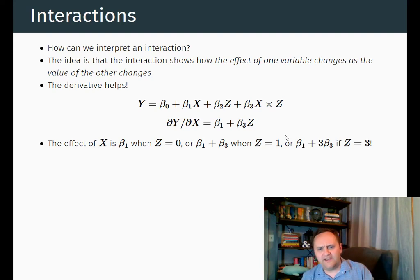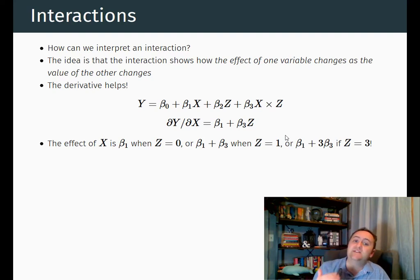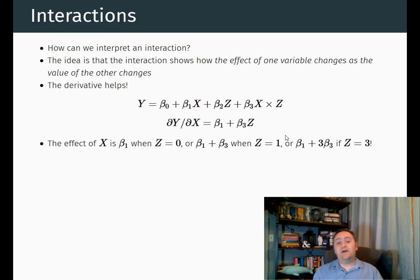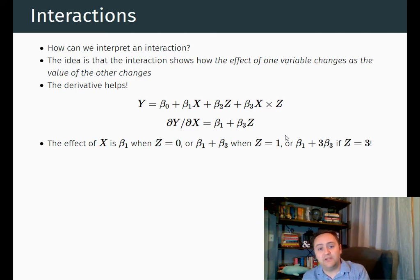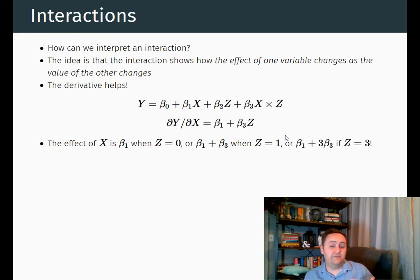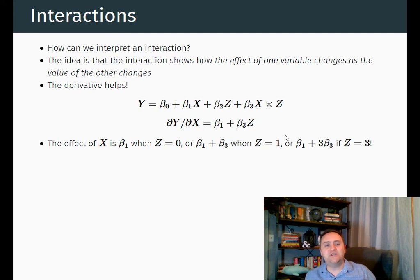The effect of x is beta 1 plus beta 3 times z, which means I can plug in different values of z to get different effects of x. If I plug in z equals 0, the effect of x is beta 1. If z equals 1, the effect is beta 1 plus beta 3. If z equals 3, I get beta 1 plus 3 times beta 3. I'm just plugging in values of z, and it changes the effect of x specifically through the coefficient on the interaction term, beta 3.